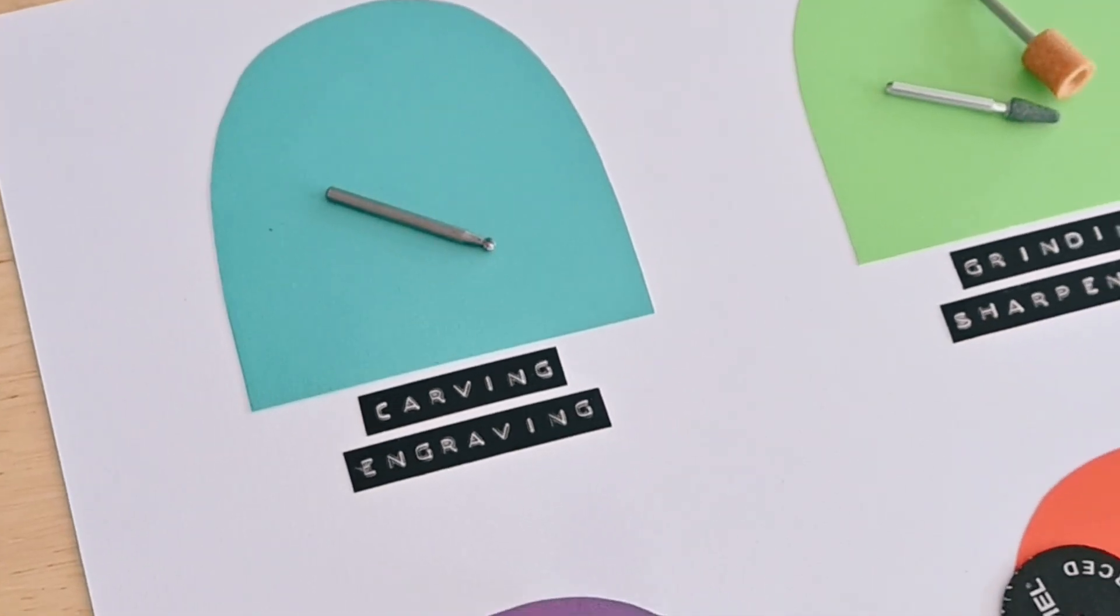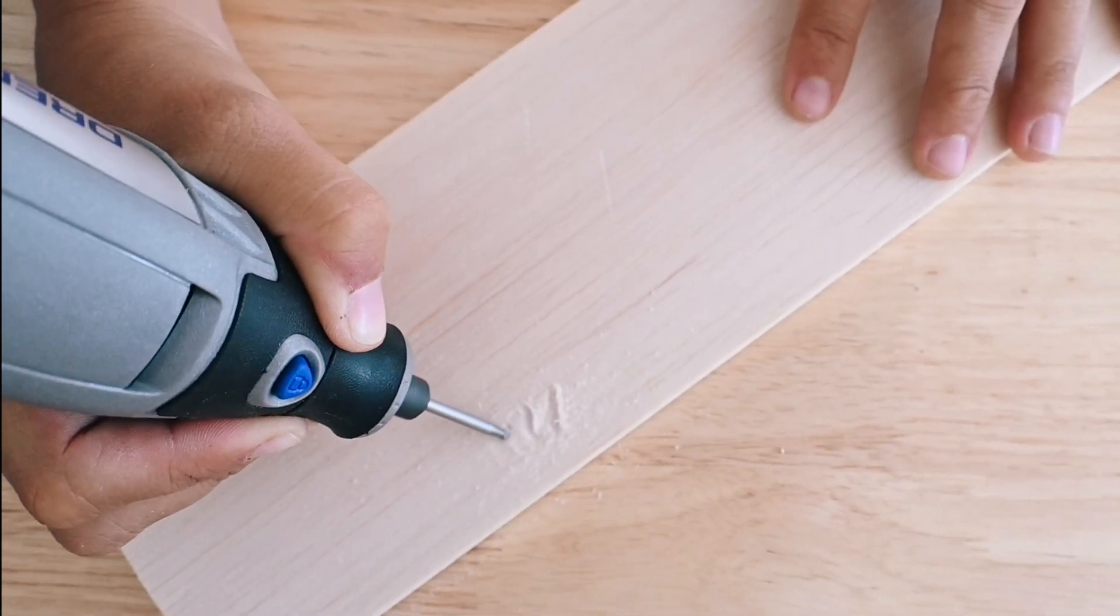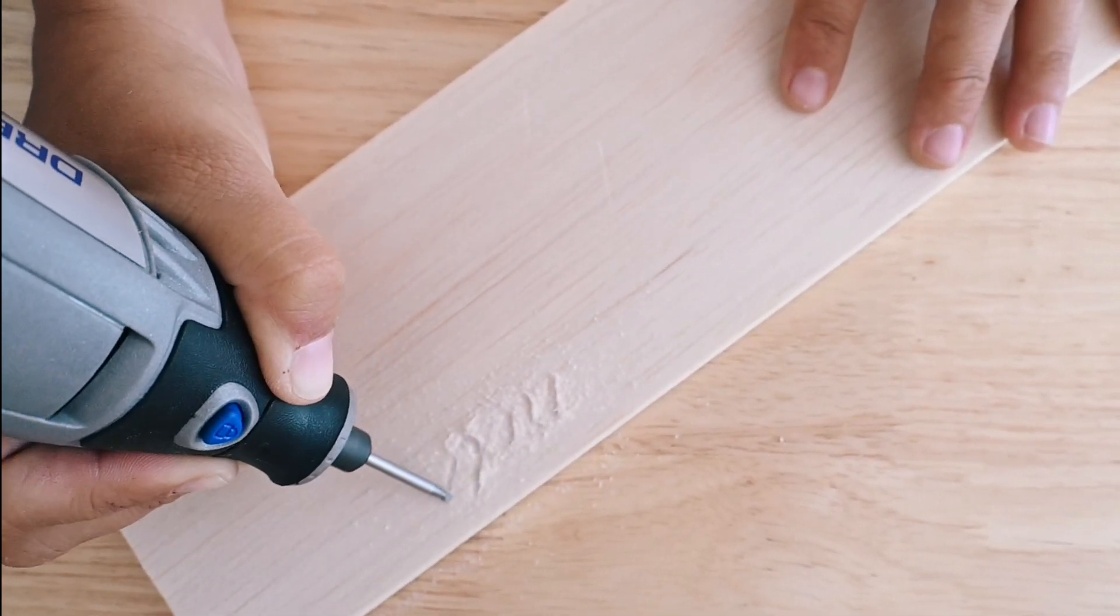Next up, carving and engraving. The Dremel is so great at carving and engraving so many different materials, including wood, stone and metal.